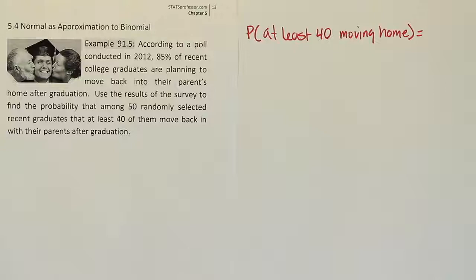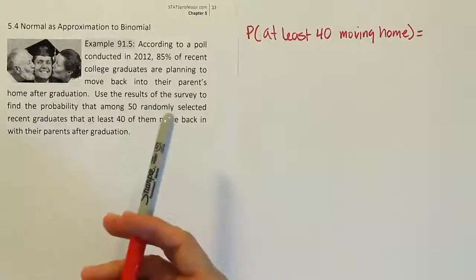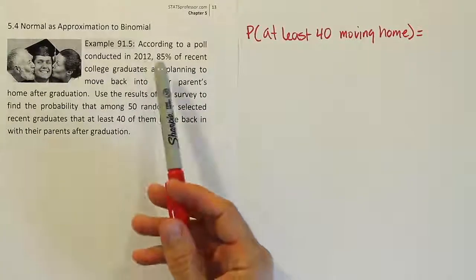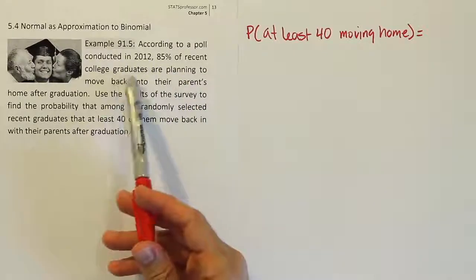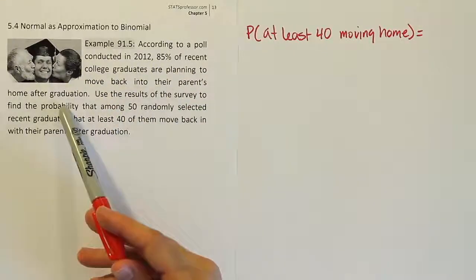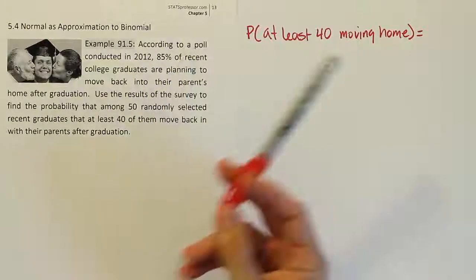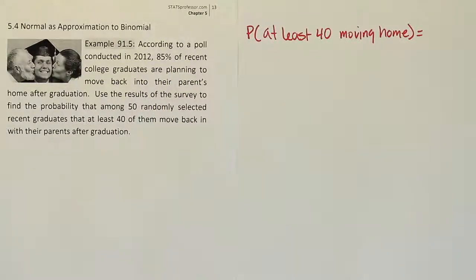How do I know it's binomial? It has a fixed number of trials. We can assume reasonably that the trials are virtually independent. We have a constant probability of success. 85% of recent college graduates are planning to move back into their parents' home after graduation. We have a fixed probability of a person moving back home. There are only two possibilities. Either the person moves home or they don't. So it fits the binomial criteria, but the problem is too hard to calculate by hand using binomial.